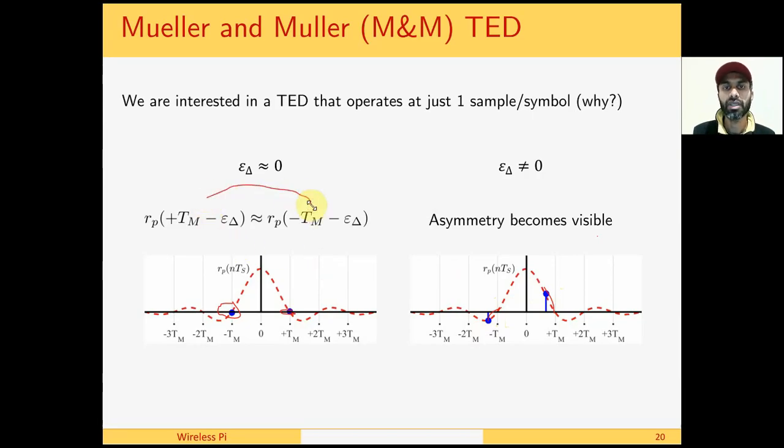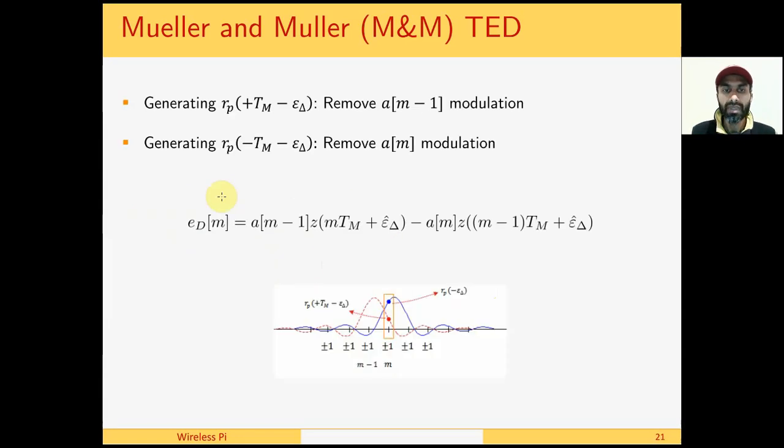If we subtract these two values, we can easily get an indicator of the timing offset that is enough to drive a timing lock loop. So now our purpose is to have an estimate of R(+TM) and R(-TM). Let us see how this can be achieved. If we remember that the matched filter output comes from pulse shape, then we multiply it with a[m-1], that is the previous symbol, where m is our current symbol.